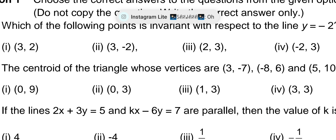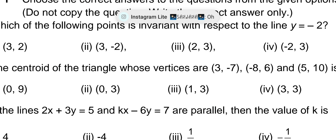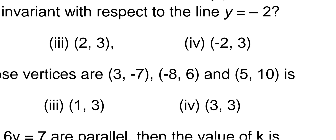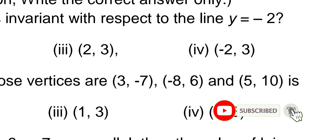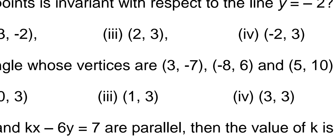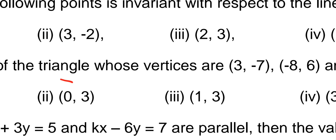The centroid of a triangle whose vertices are (3, -7), (8, 6), and (5, 10): centroid means sum of all x-coordinates divided by 3, and sum of all y-coordinates divided by 3. So 3 - 8 + 5 = 0, divided by 3 is 0. For y: -7 + 6 = -1, plus 10 = 9, divided by 3 is 3. So the centroid is (0, 3), which is the second option.